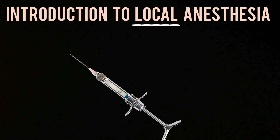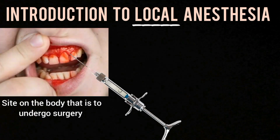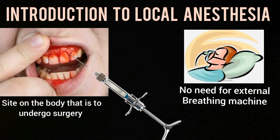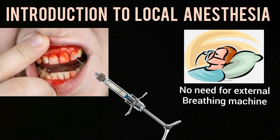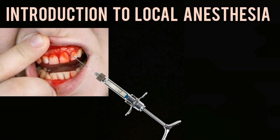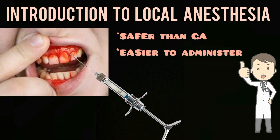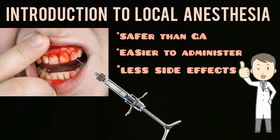As suggested by the name, local anesthesia is given locally to a specific site on the body that is to undergo surgery. There is no need for an external breathing machine, which is required in general anesthesia, as the respiratory muscles are not paralyzed. In addition, it is relatively safer than general anesthesia, easier to administer, and causes fewer side effects.